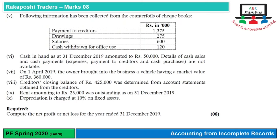A debtor's balance of rupees 15,000 is irrecoverable. Information was collected from the counterfoils of checkbooks — counterfoil wala portion hota hai — jisme payment to creditors, drawings, salaries, aur cash withdrawn for office use given hain. Cash in hand ka balance 50,000 year end ka pata hai. Details of cash sales, cash payments, payment to creditors, and cash purchases are not available.